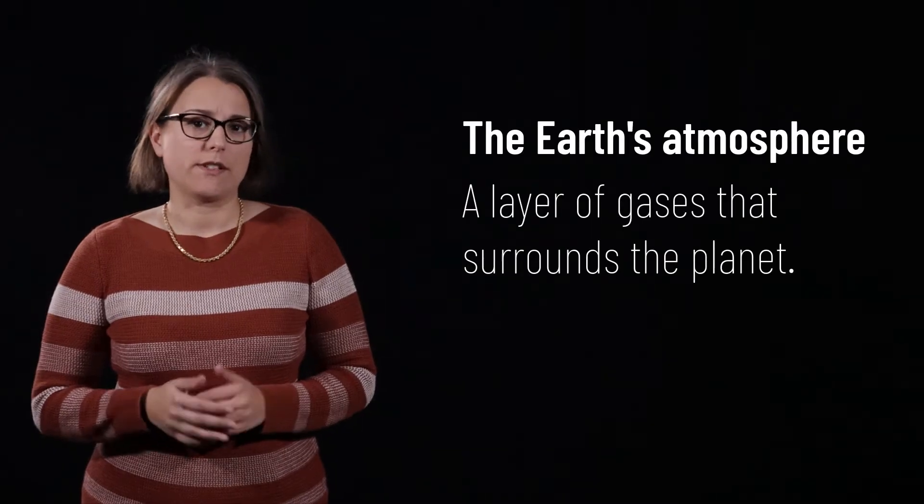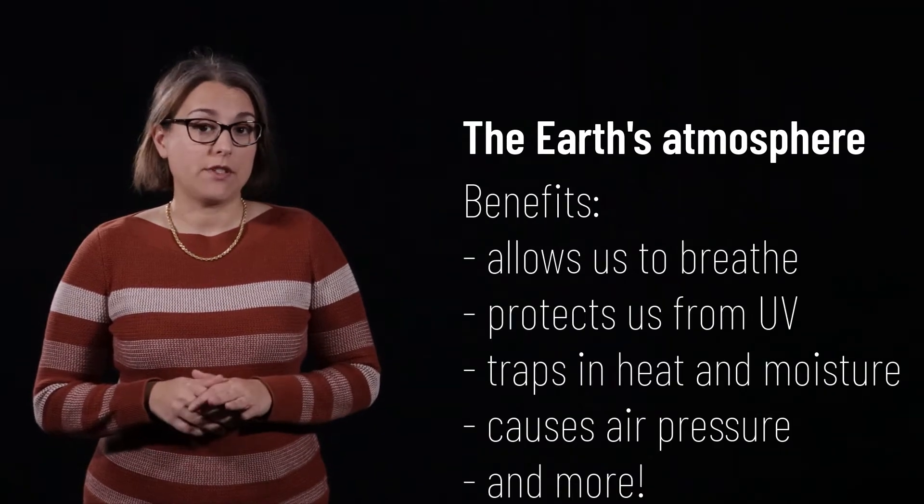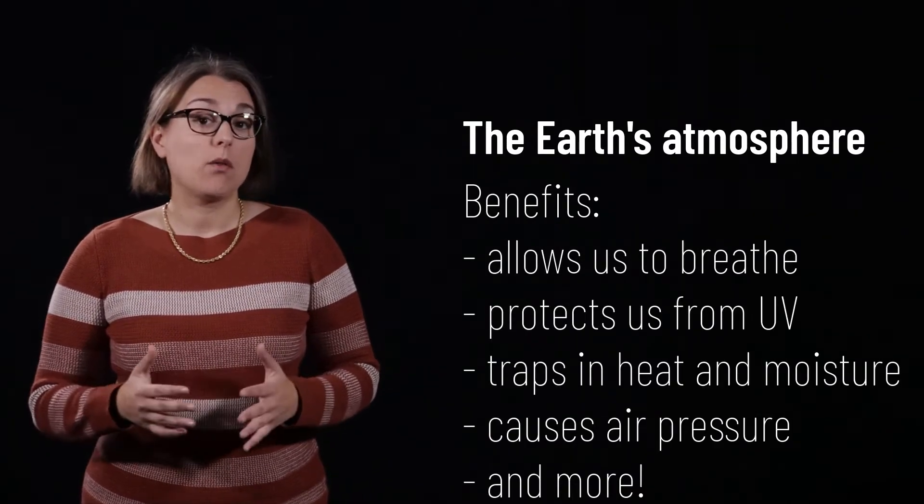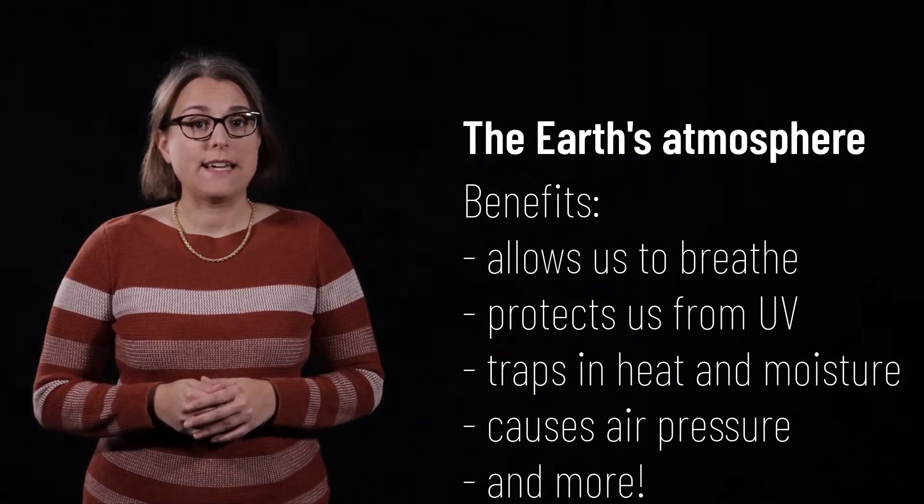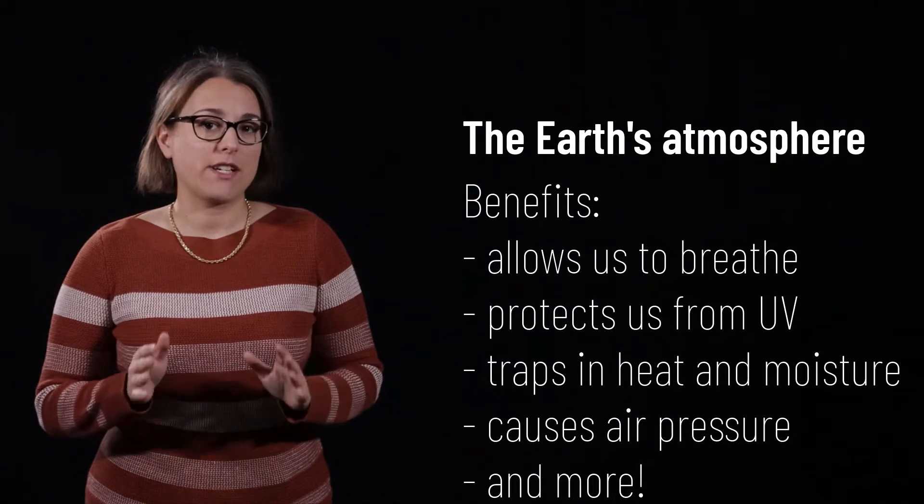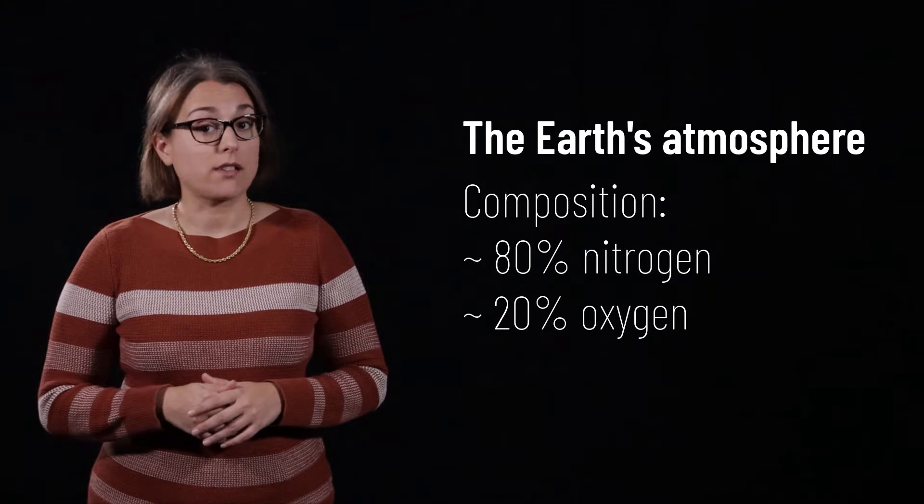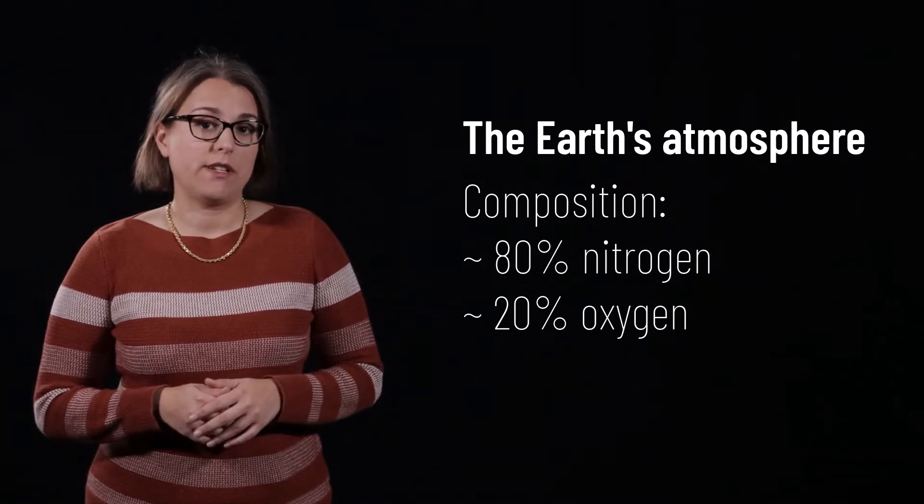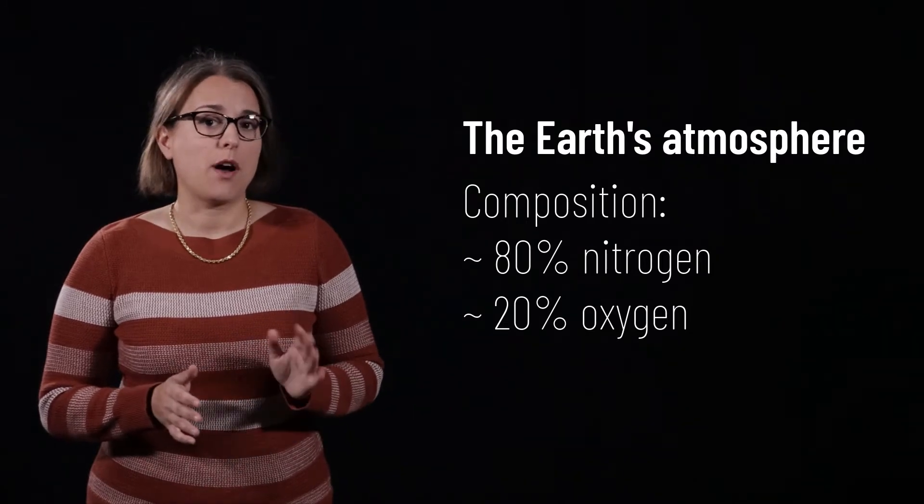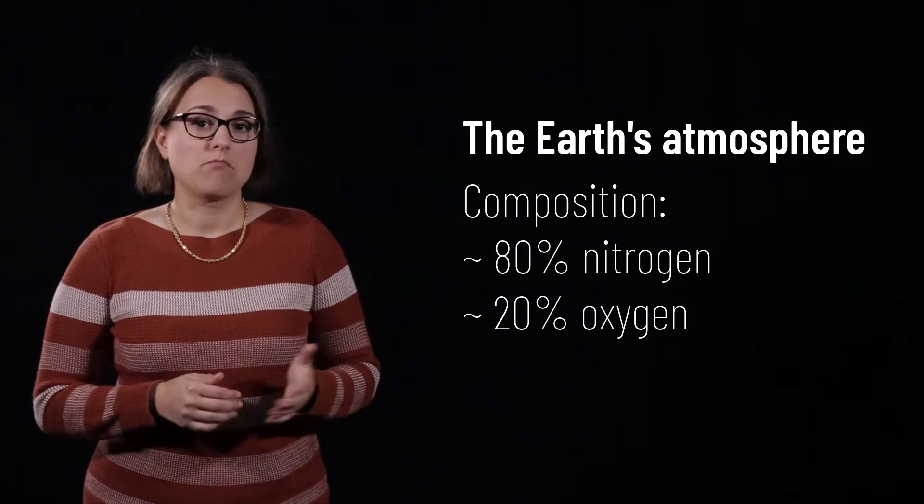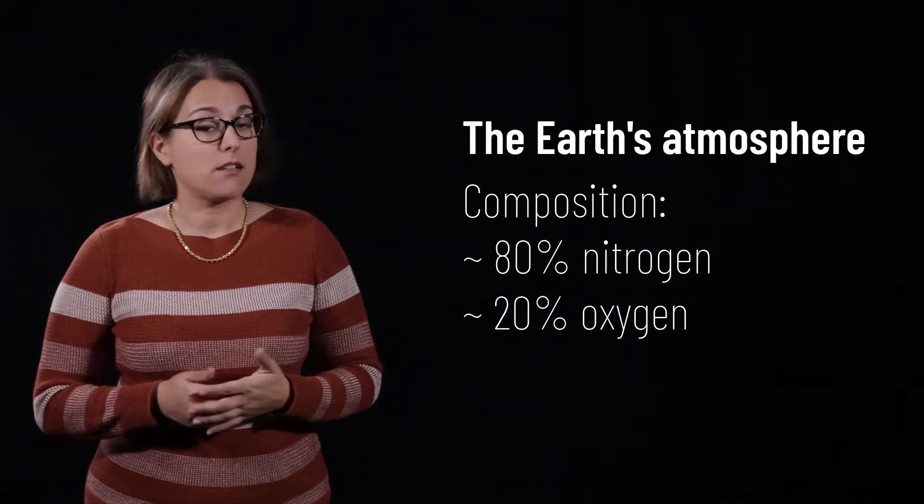The Earth's atmosphere is a layer of gases that surrounds the planet. The atmosphere doesn't just allow us to breathe, it also protects us from UV radiation, traps moisture and heat, and exerts forces on every surface it touches. The composition of the Earth's atmosphere is approximately 80% nitrogen and 20% oxygen. There are also trace amounts of some other gases in our atmosphere: argon, carbon dioxide, water vapor, and other gases.